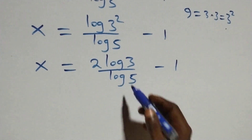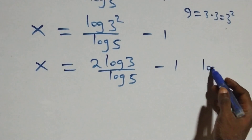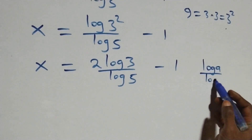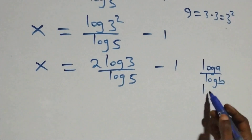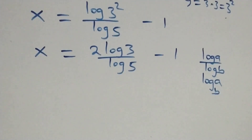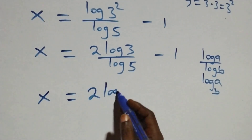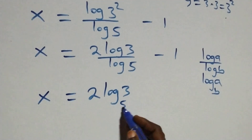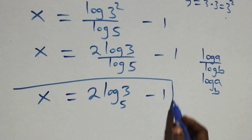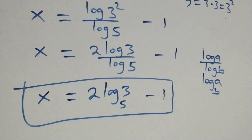We apply the change of base rule: log a over log b can be expressed as log a to base b. This gives us x equals 2 log base 5 of 3 minus 1. So the value of x in this problem is x equals 2 log base 5 of 3 minus 1. Let's check if this satisfies the original equation.